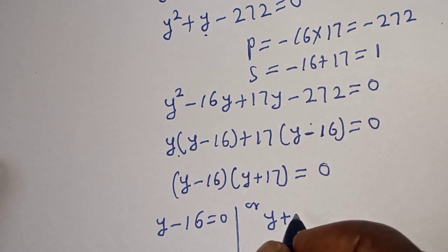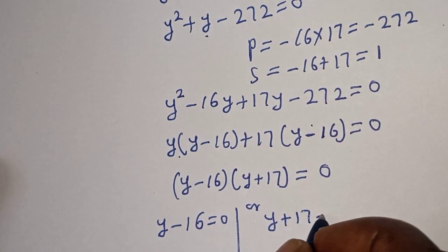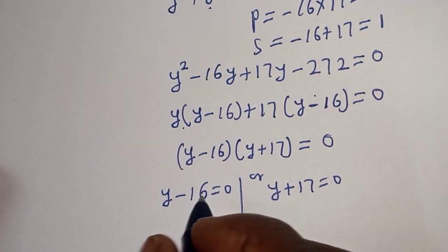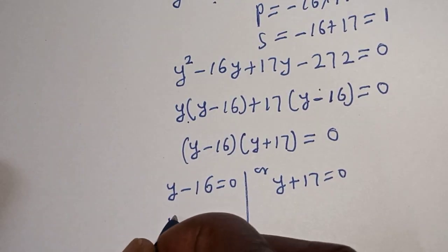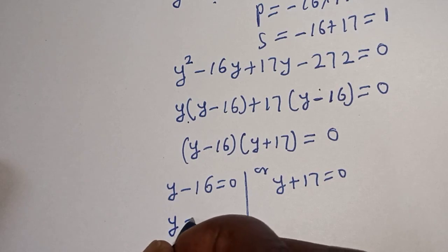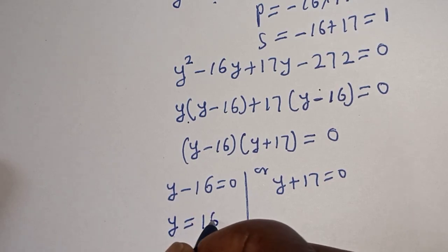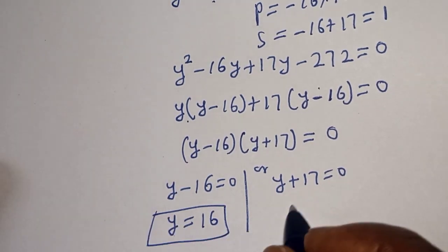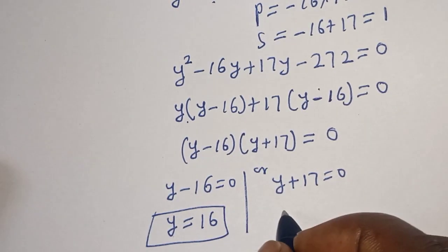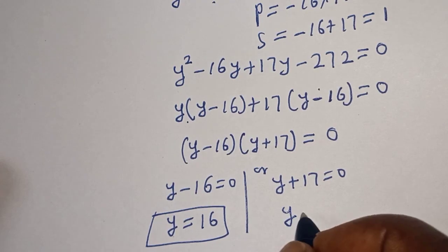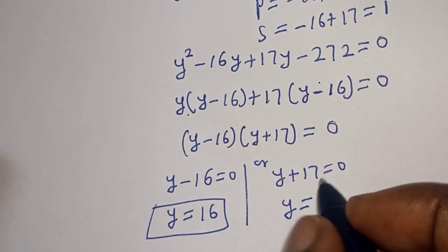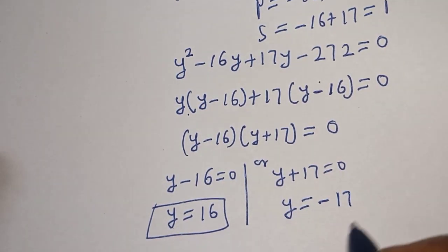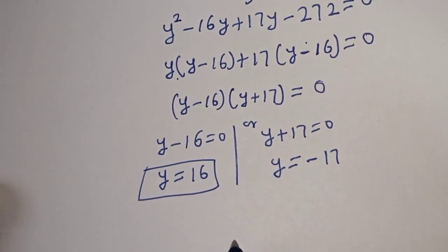There are two cases here. Either y minus 16 equals 0, giving y equals 16, or y plus 17 equals 0, giving y equals minus 17.